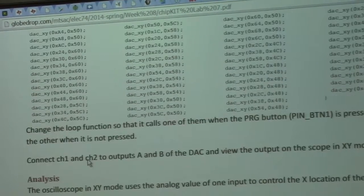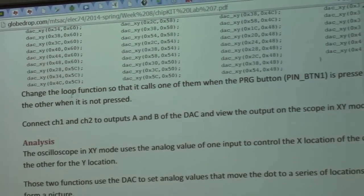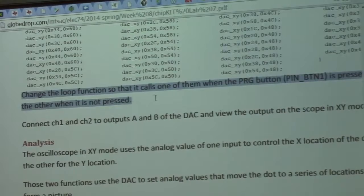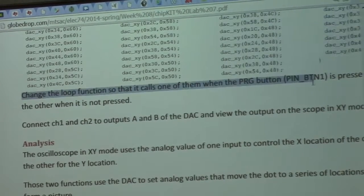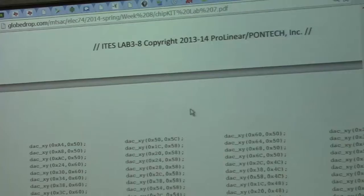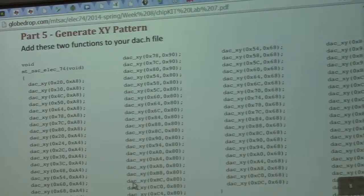Add these to the DAC.h. And then change the loop so that it calls one when the program button is pressed, and it calls the other when it's not pressed. So there's two functions. I'll go by really quick.